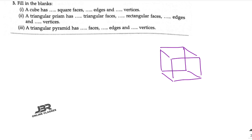So the first answer is six faces. Now edges — these lines are called edges. Four edges on top, four on the bottom — that's eight — then nine, ten, eleven, twelve. So twelve edges. Vertices are the connecting points: four vertices on top, four on the bottom — eight vertices. So a cube has six faces, twelve edges, and eight vertices.